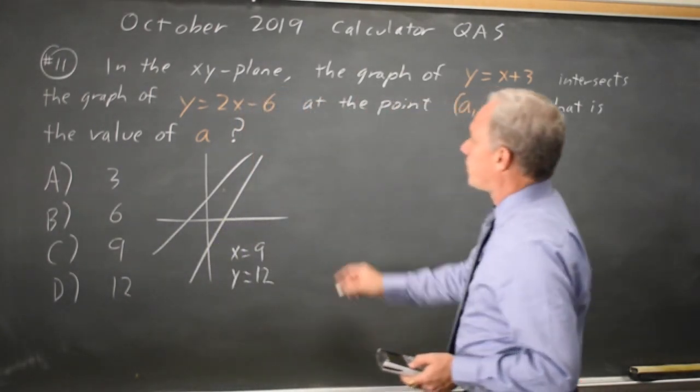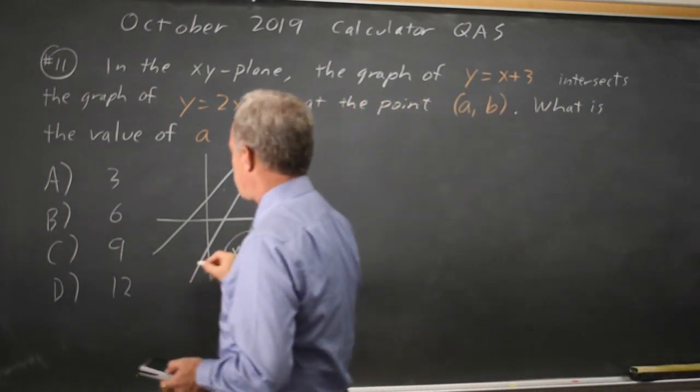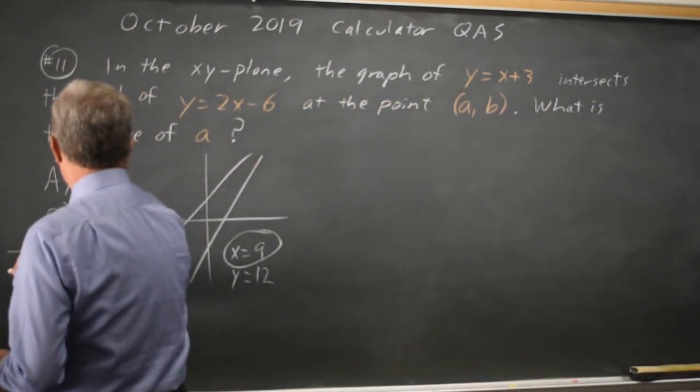They're asking for the value of a, which is the x-coordinate of the point of intersection. And that's 9. Choice C.